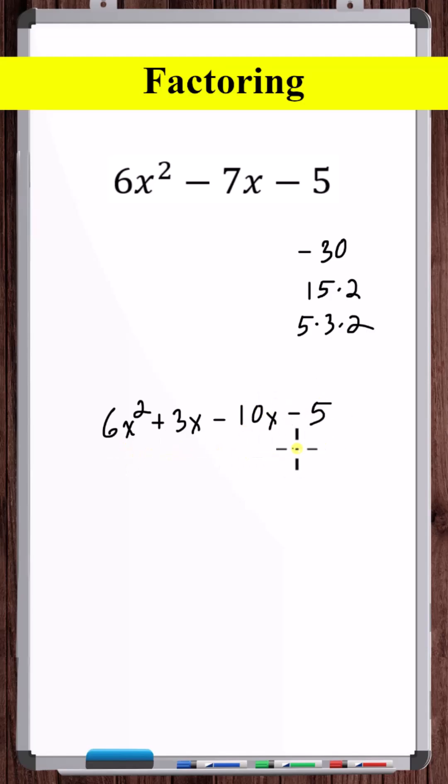So now we have a four-term expression and we're going to factor this by grouping. Let's take out a 3x from these two terms. Let's take out a minus 5 from these two terms. So now we see we can factor out a 2x plus 1. And there we go.